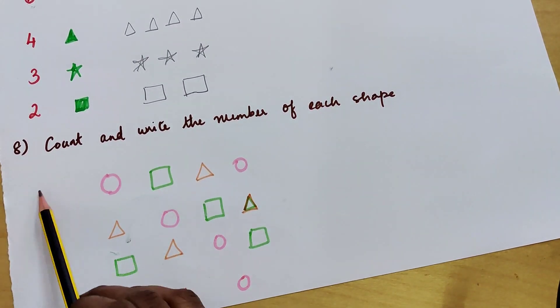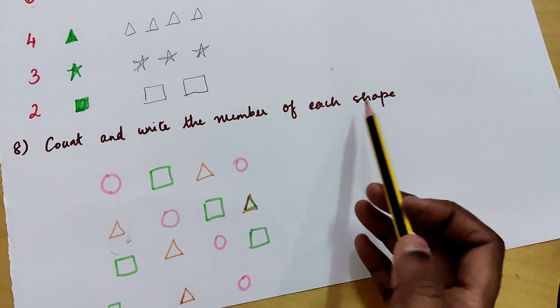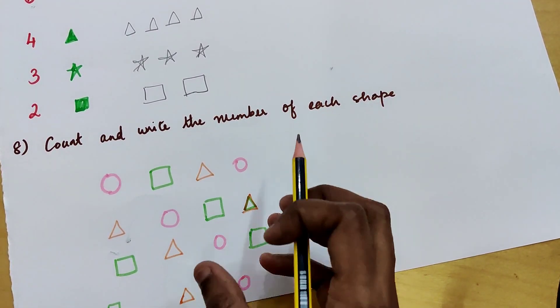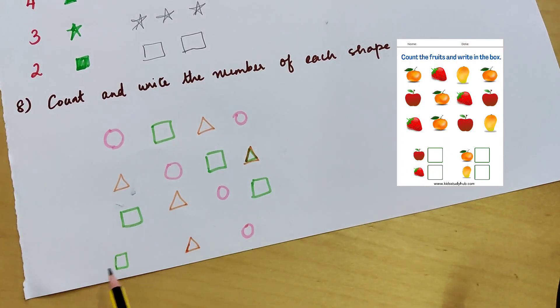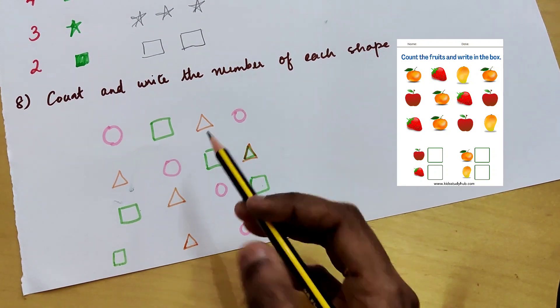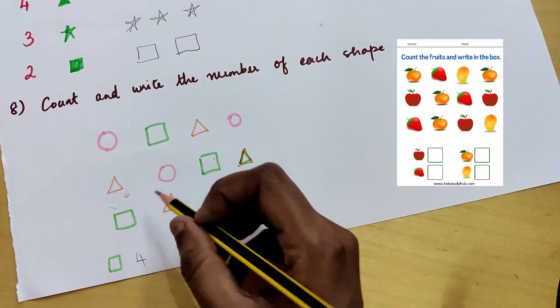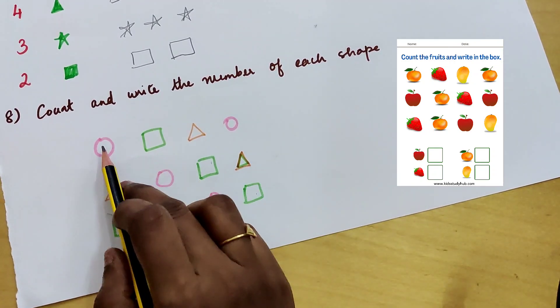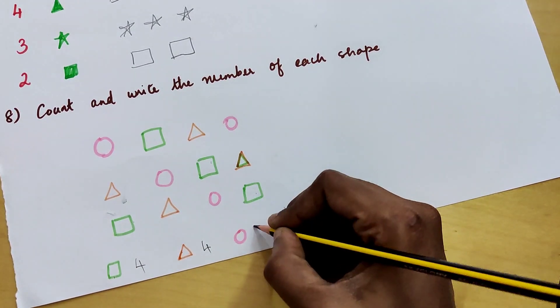And the last one is count and write the number of each shape. So they must be able to count under each category and sort and write. So first is square. 1, 2, 3, 4. Triangle. 1, 2, 3, 4. Circle. 1, 2, 3, 4. There are 4 circles.